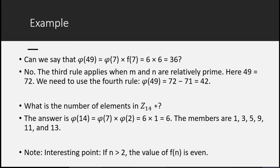The third property applies only when m and n are relatively prime — i.e., they are not the same prime. For 49 = 7², the fourth rule gives φ(49) = 7² − 7¹ = 42, which is the correct answer. For Z₁₄ (the integers mod 14), φ(14) = 6, and the elements are 1, 3, 5, 9, 11, 13.